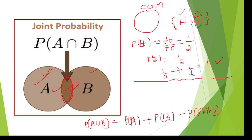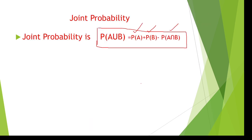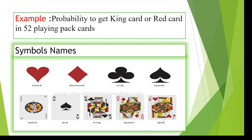This applies not just to events but to any real-world data. For example, if two companies A and B exist, the combined data is company A data plus company B data minus the common data, A intersection B.